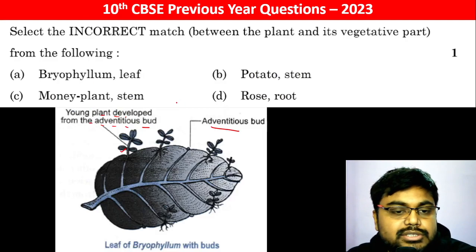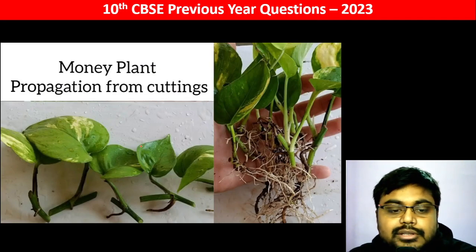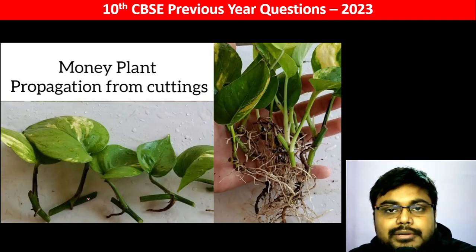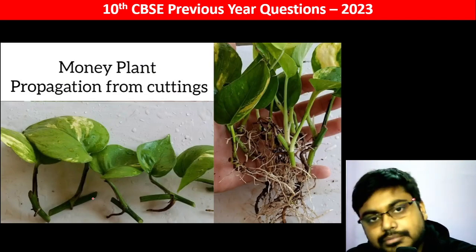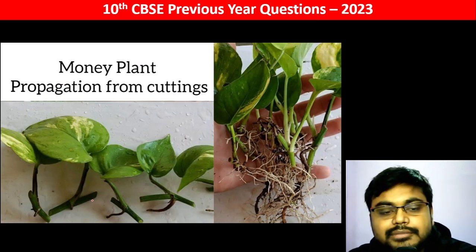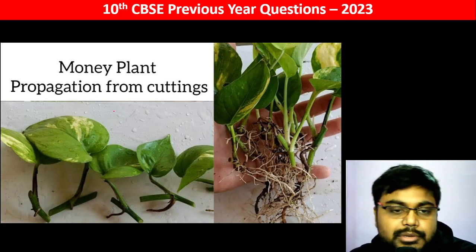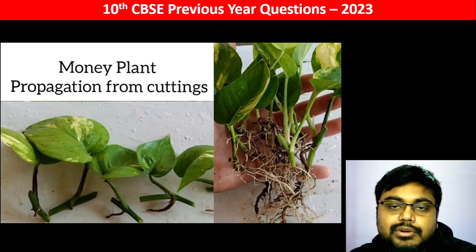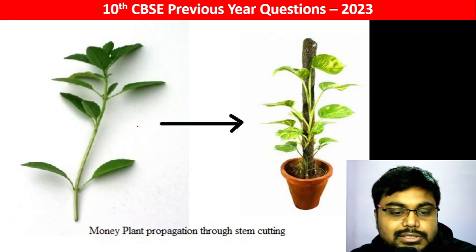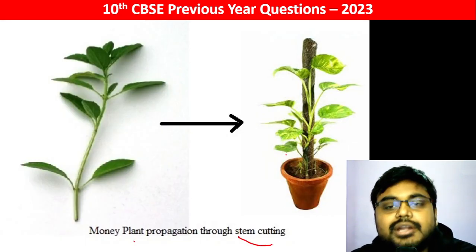Next is money plant. We cut the stem of the money plant, and from that stem cutting, the money plant develops. Therefore, the money plant propagates from stem cuttings, as seen in money plant propagation through stem cutting.